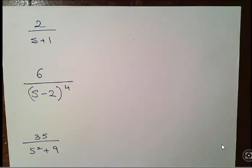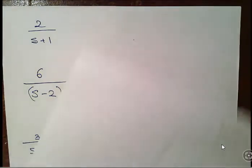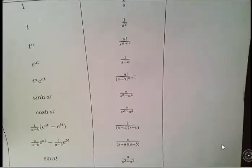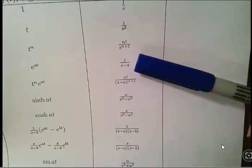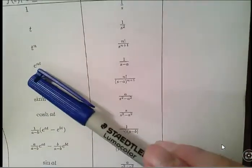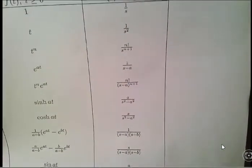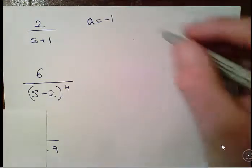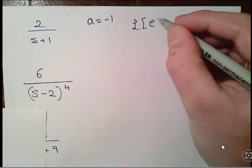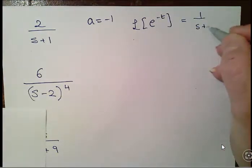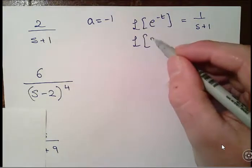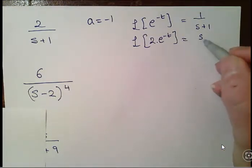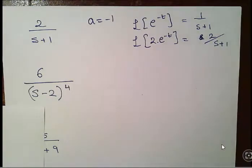Next: 2 over s plus 1. Looking at the formula sheet, the Laplace transform of e to the at is 1 over s minus a. We have s plus 1, so we let a = -1. Therefore the Laplace transform of e to the minus t is 1 over s plus 1, and the Laplace transform of 2 times e to the minus t is 2 over s plus 1. So the inverse Laplace transform of 2 over s plus 1 is 2e to the minus t.